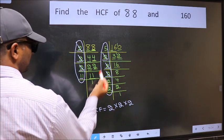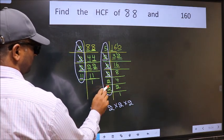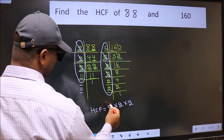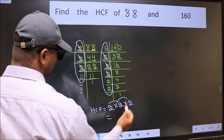Next number 11. Do we have 11 here? No. No more numbers are left out. So our HCF is 2 times 2, 4 times 2, 8 is our HCF.